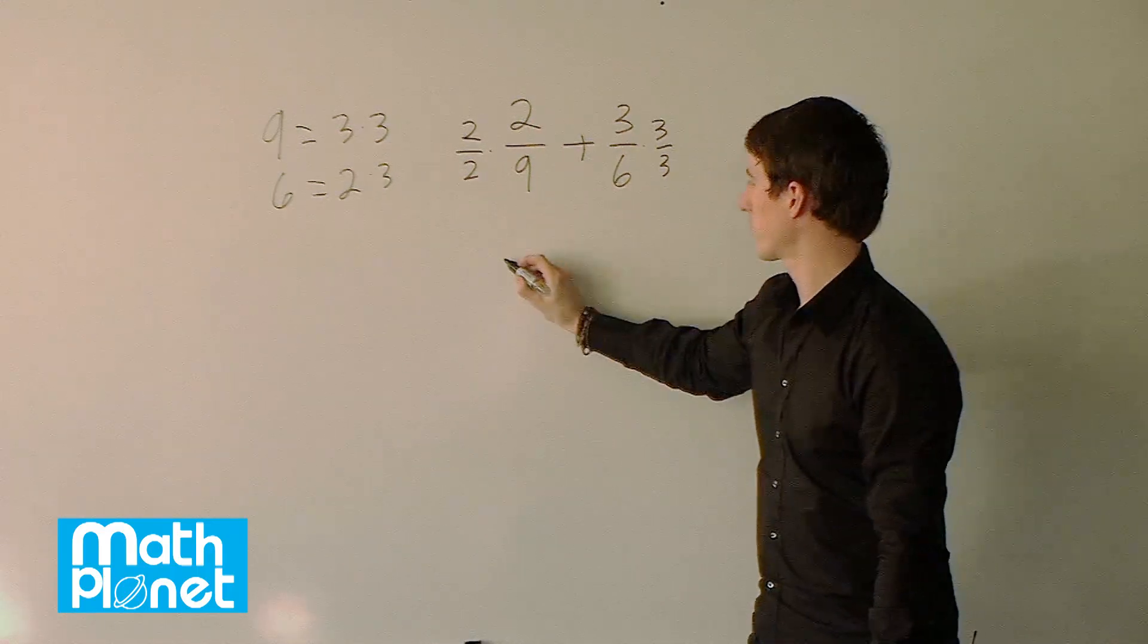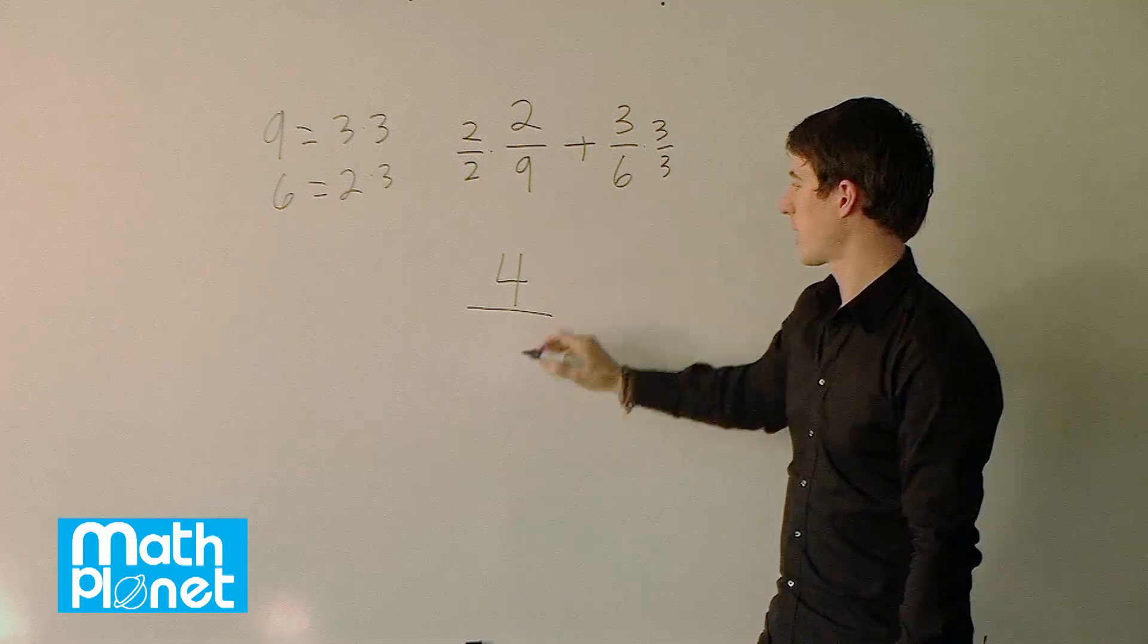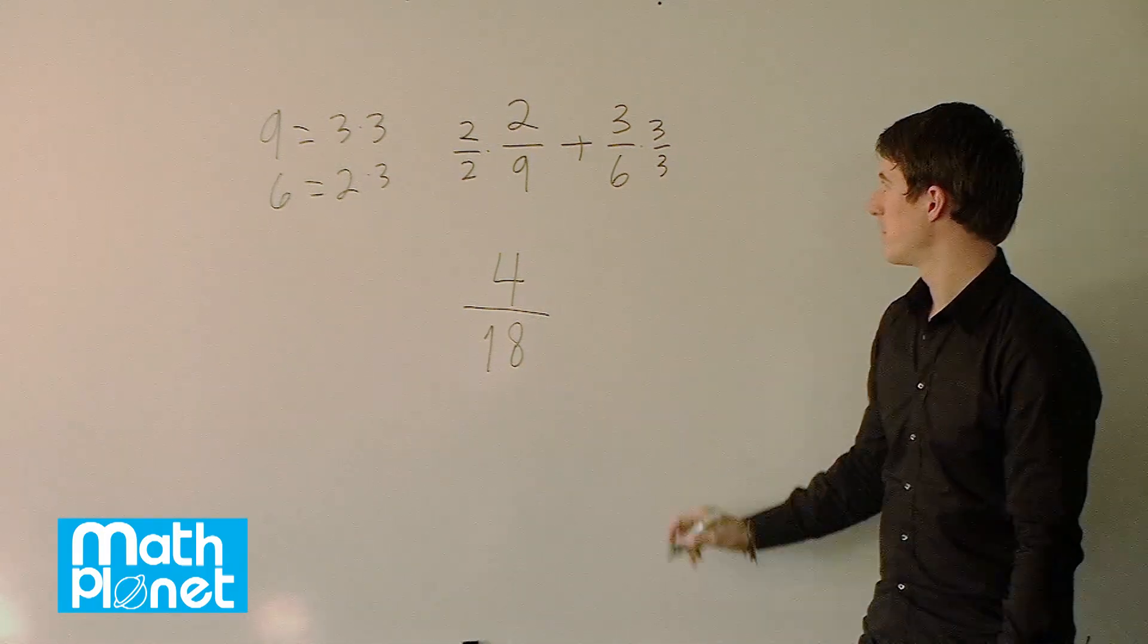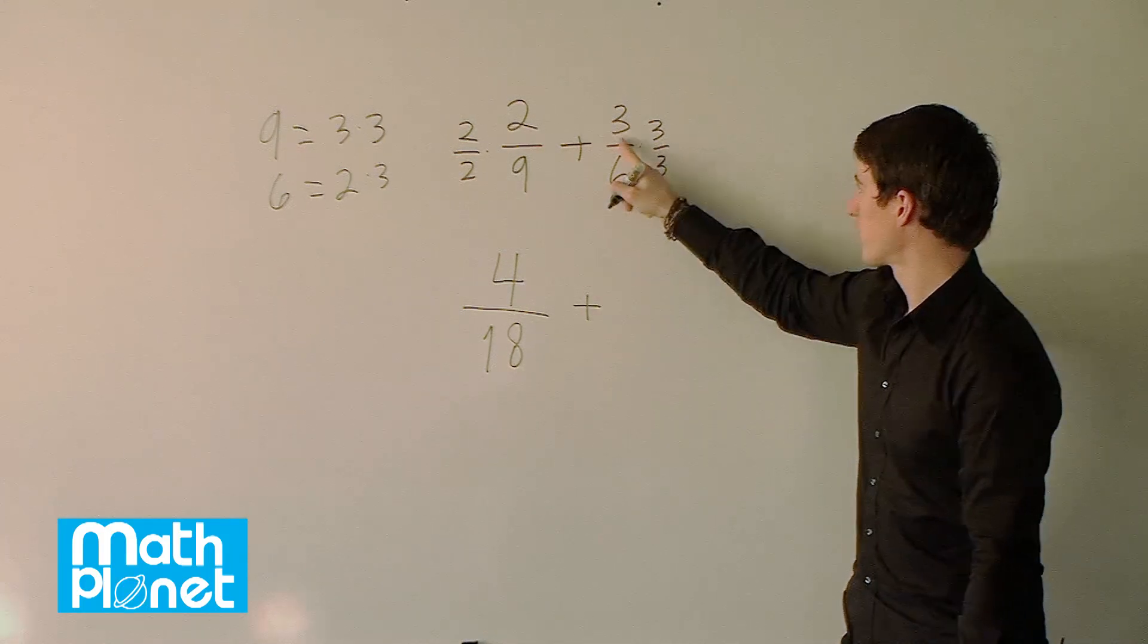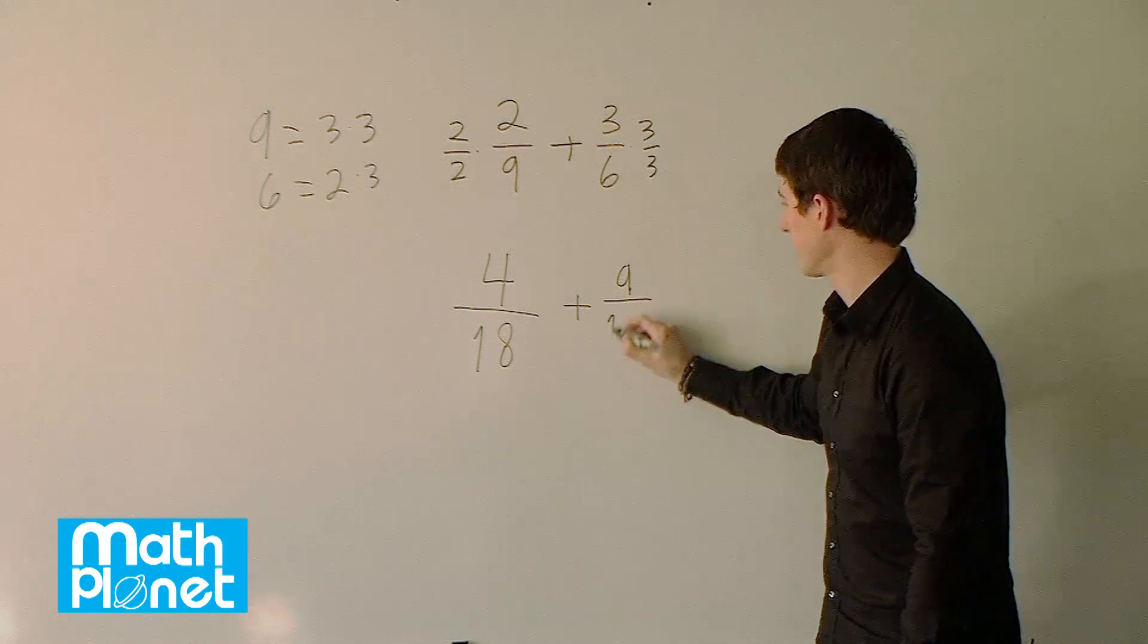So 2 times 2 gives us 4 and then 2 times 9 gives us 18. So of course that's what we were going for originally. And then we rewrite this. 3 times 3 is 9 and 6 times 3 is 18.